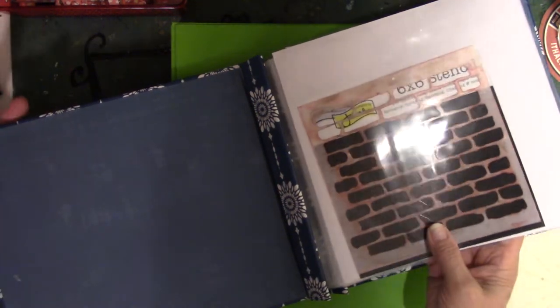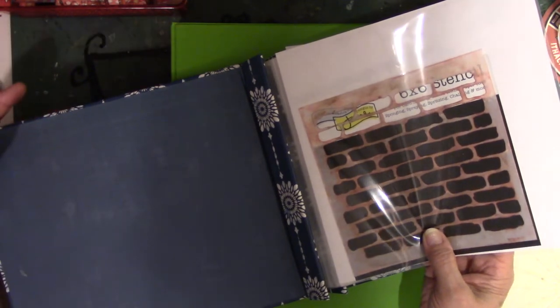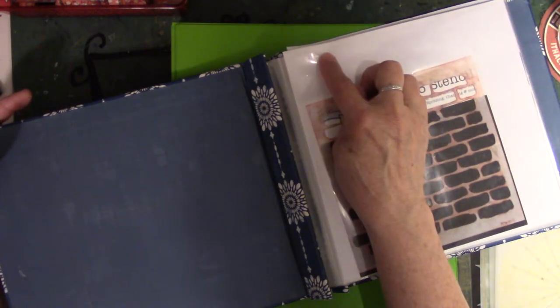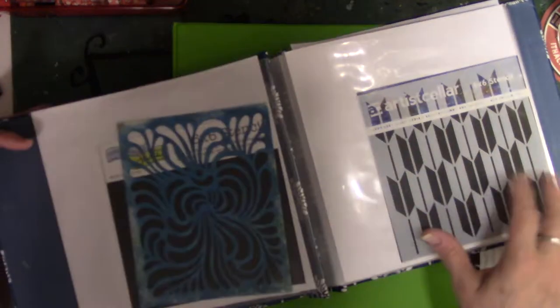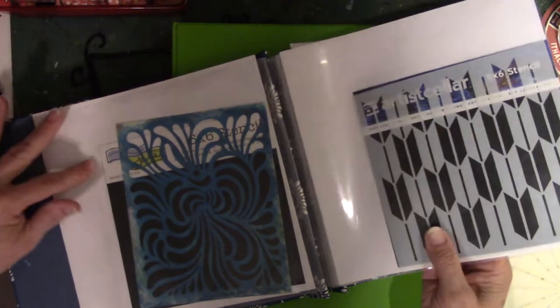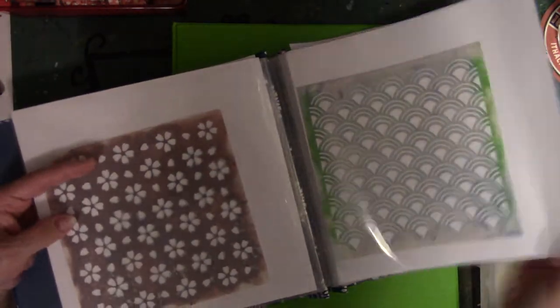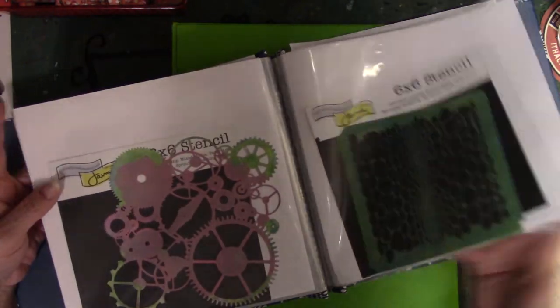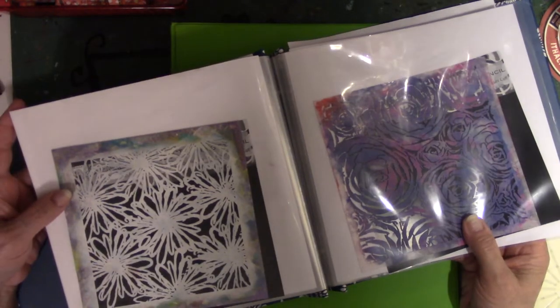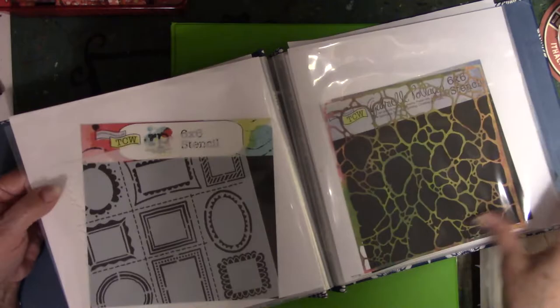So I leave my stencils in the original package because I can never remember who the designer is and I don't want to write it on the white paper because what if I move stuff around or get rid of things. So this is how I store my six by sixes. I love the size six by six. I don't know why because my very first jelly plate was a five by seven.